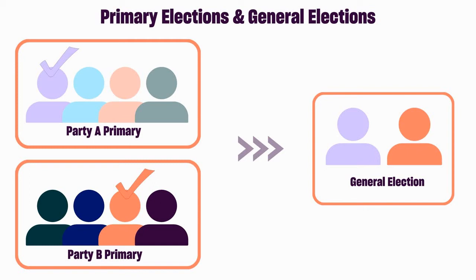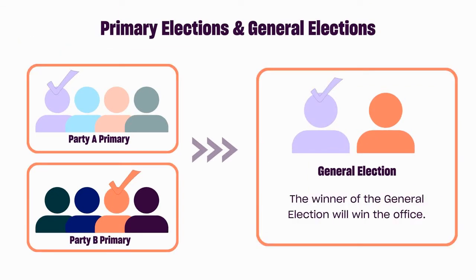Someone winning the primary does not automatically get them the job. The winner of the primary election will have to run again in the general election, where they will go against other candidates that won their party's primary election. The winner of your political party's primary election will move on to represent your party in the general election that happens every year.